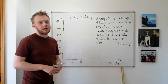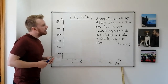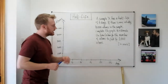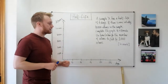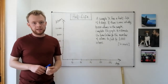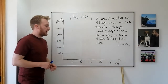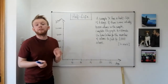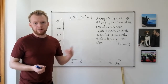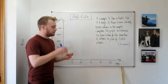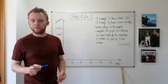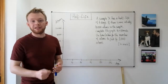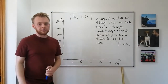Here's an example question you might face in your exams. It says: sample X has a half-life of six days. If there were initially 10,000 atoms in the sample, complete the graph to estimate the time taken for the number of atoms to fall to 1,000 atoms. There are four marks available: two for correctly plotting all the points, one for an accurate curve of best fit, and one for using that to identify the time.